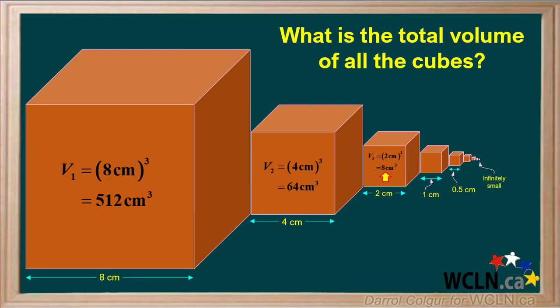The volume of the third cube, V3, would be 2 cm cubed, or 8 cm³. And the volume of the fourth cube, which has a length of 1 cm, would be 1 cm³.